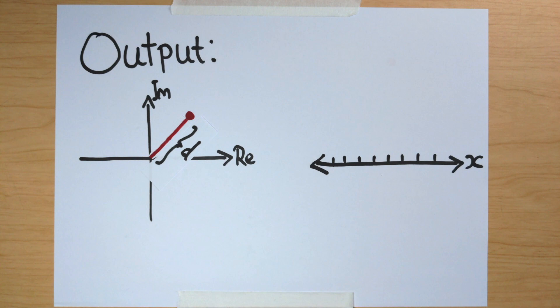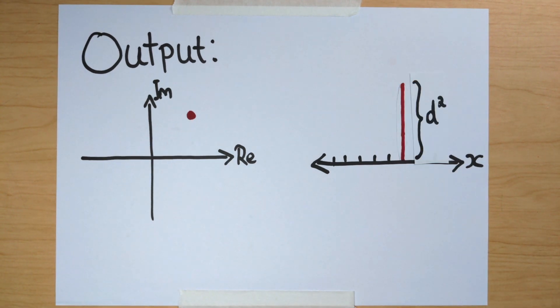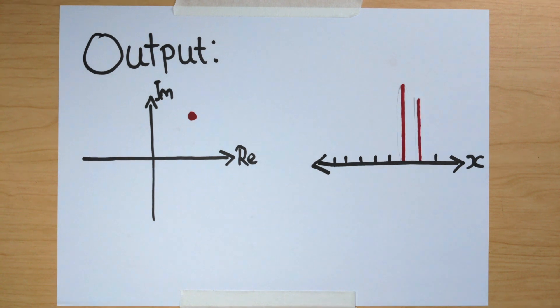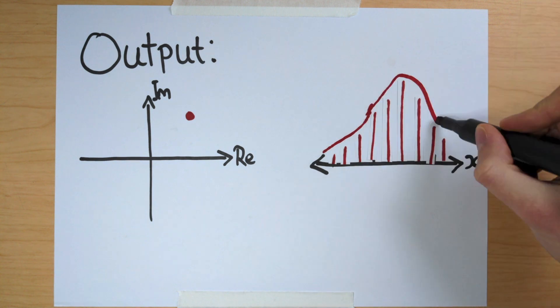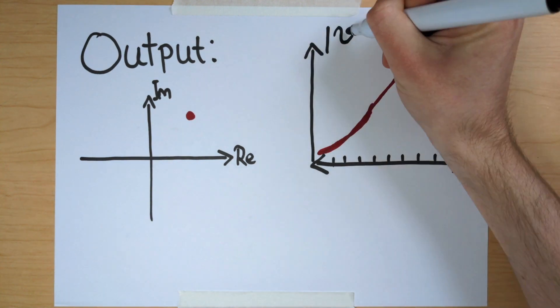Well, probabilities are always greater than zero. So what if we took something about this complex output that satisfied that property? Maybe the distance of the number from the origin, d — that's certainly always greater than zero. It turns out we actually need this distance squared. So for a possible location, I look at the value of the wave function at that point, take the length d of the output, square it, and that tells me the probability of finding the particle there.